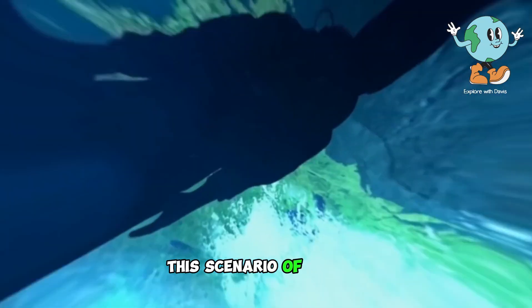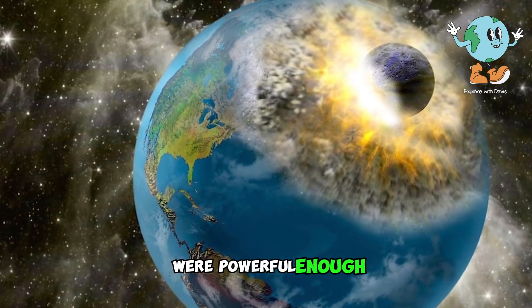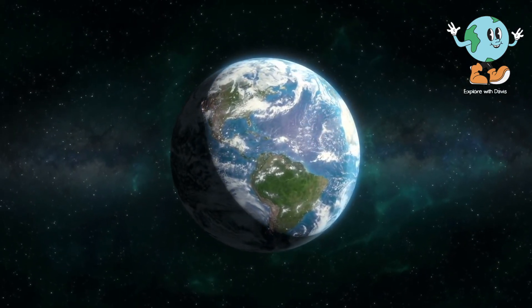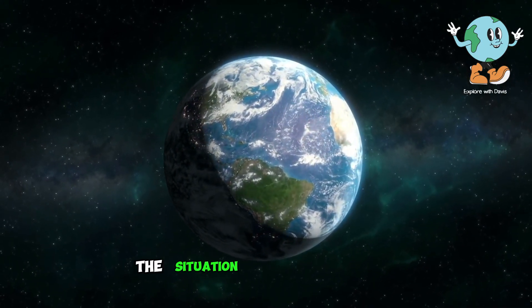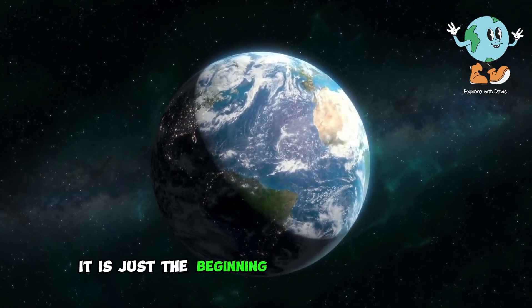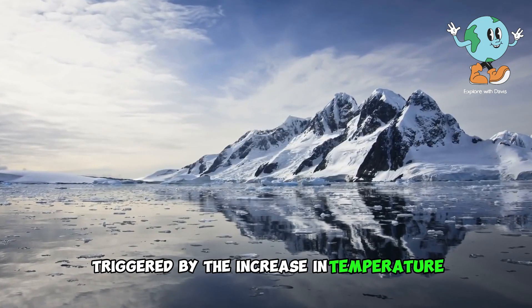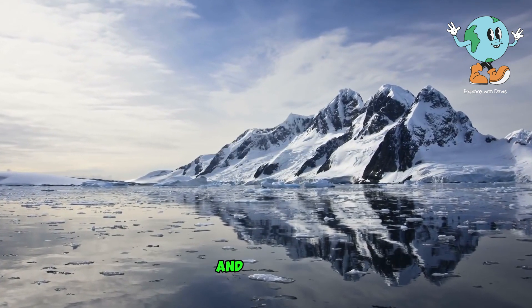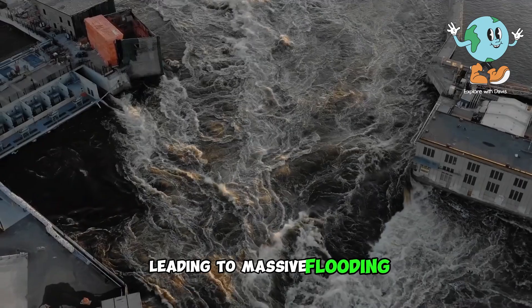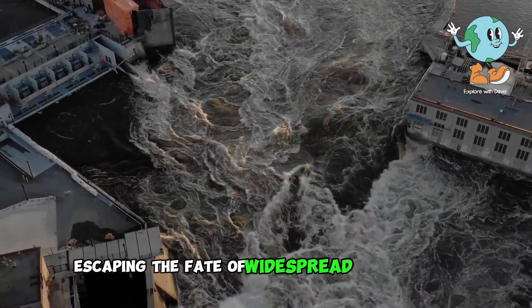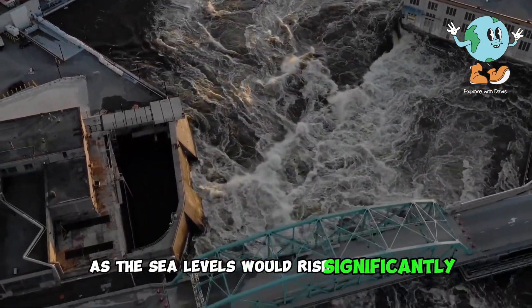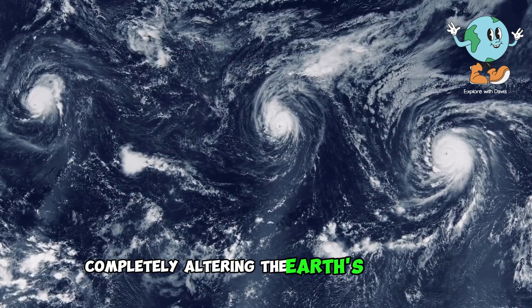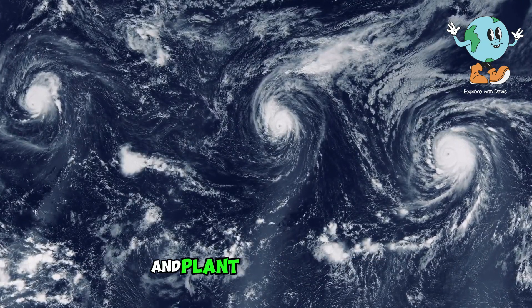This scenario would only occur if the collision were powerful enough to cause a fracture in a section of Earth. In the event that Earth survives the initial impact without fracturing, the situation doesn't end there. It is just the beginning of a series of events triggered by the increase in temperature resulting from the collision. The first consequence would be the melting of snow and ice caps, leading to massive flooding. There would be no escaping widespread submergence as sea levels rise significantly. Water would cover almost every area, completely altering Earth's landscape. All green spaces and plant life would perish.